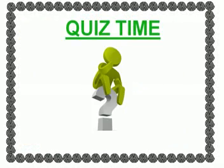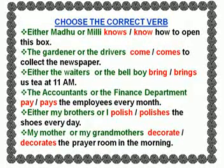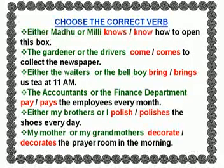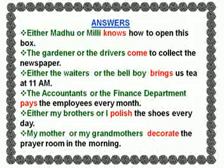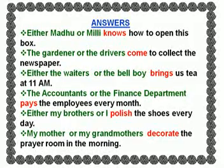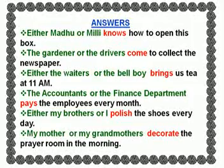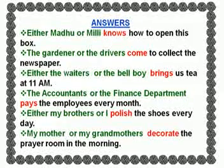Now take this quiz. Choose the correct verb. Here are the answers: Either Madhu or Millie knows how to open this box. The gardener or the drivers come to collect the newspaper. Either the waiters or the bellboy brings us tea at 11am. The accountants or the financial department pays the employees every month. Either my brothers or I polish the shoes every day. My mother or my grandmothers decorate the prayer room in the morning.